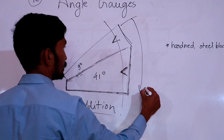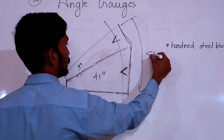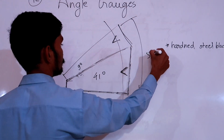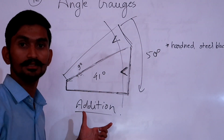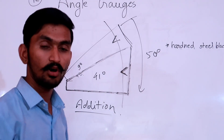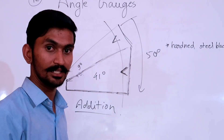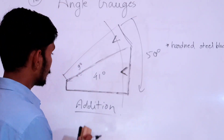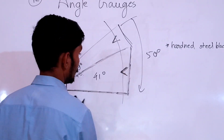So the total angle is 50 degrees. This is an example of the addition of angle gauges.